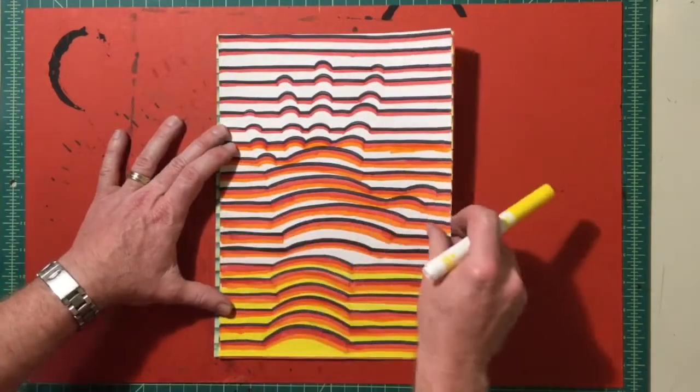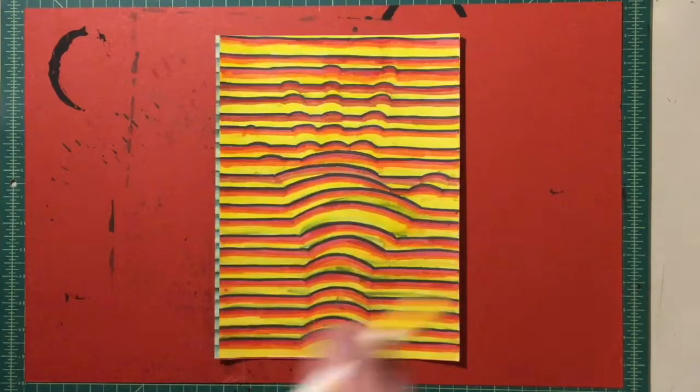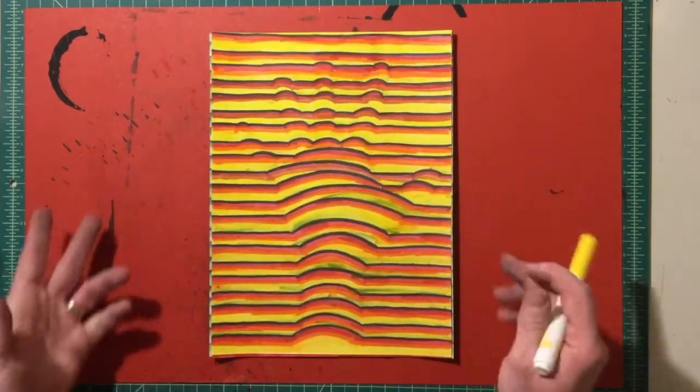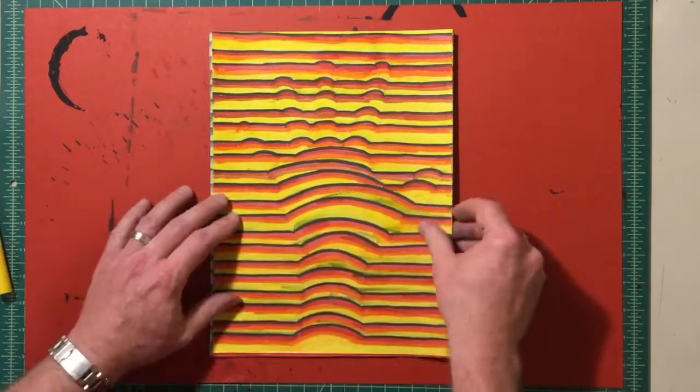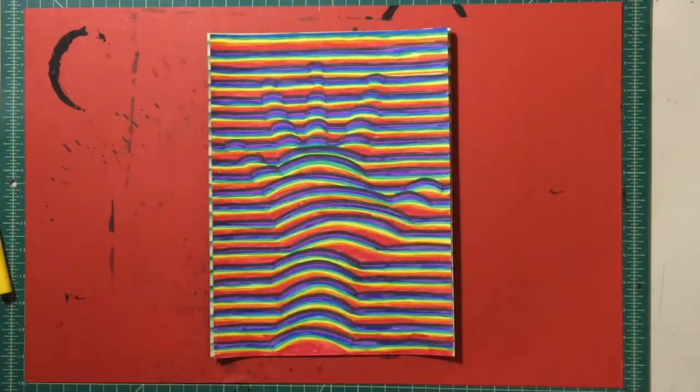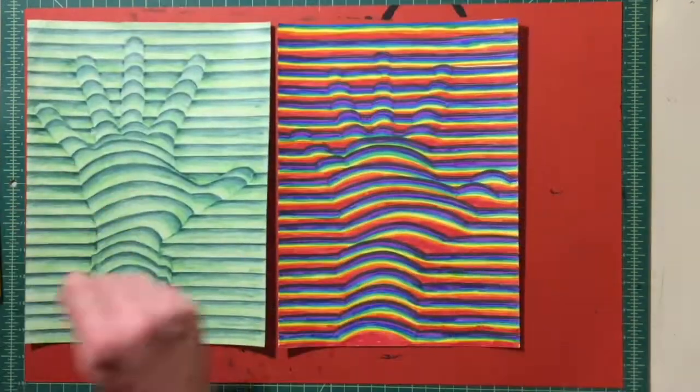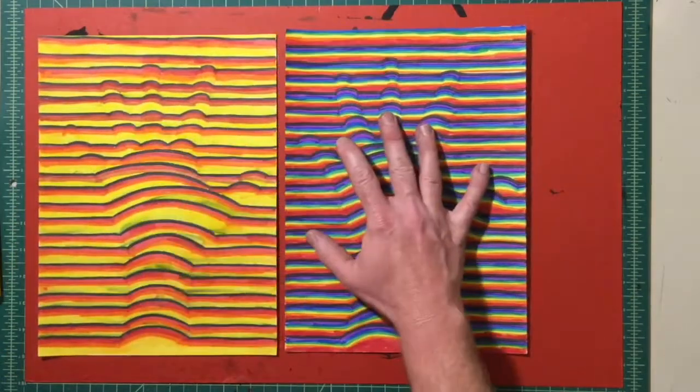And finally take your last color and fill up all the white spaces. Now you are not limited to just three or four colors. You can use as many colors as you want to, whichever colors you want to. It really is up to you. Now I didn't really shade with the markers, but you can use a black colored pencil and shade those lines darker as they get closer to your hand.